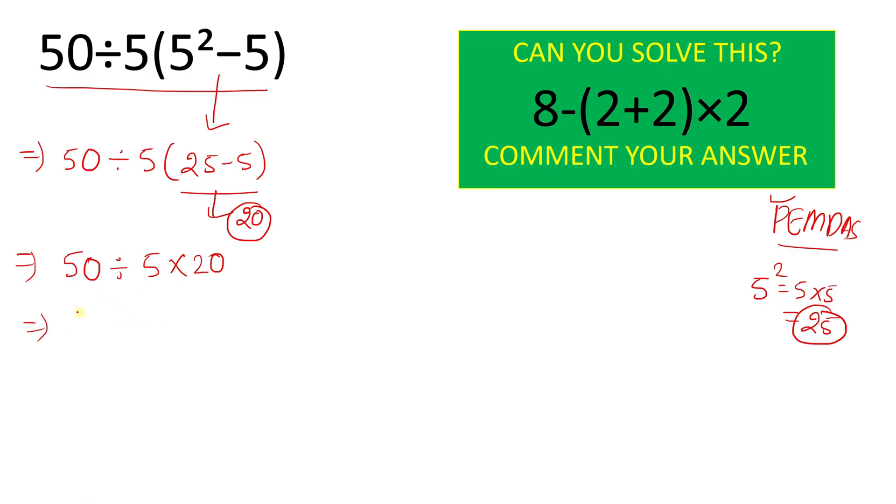Now if you think like 50 divided by 5 times 20 will give result here, 100, and 50 by 100 will give result 1 by 2 or 0.5, then you are completely wrong. How to solve in the right way, I will show you.